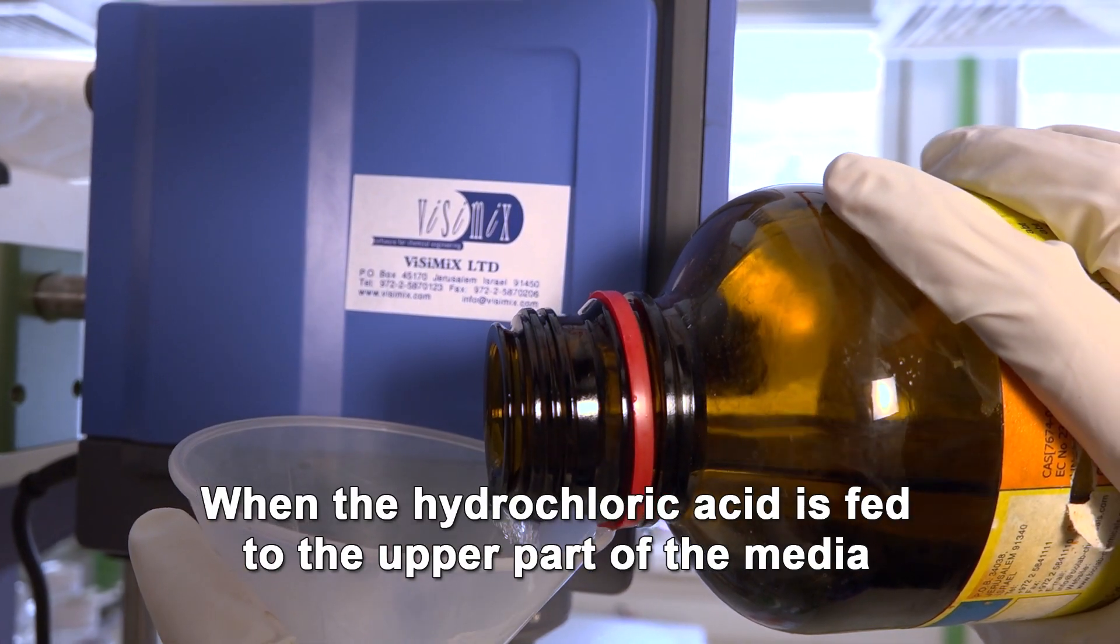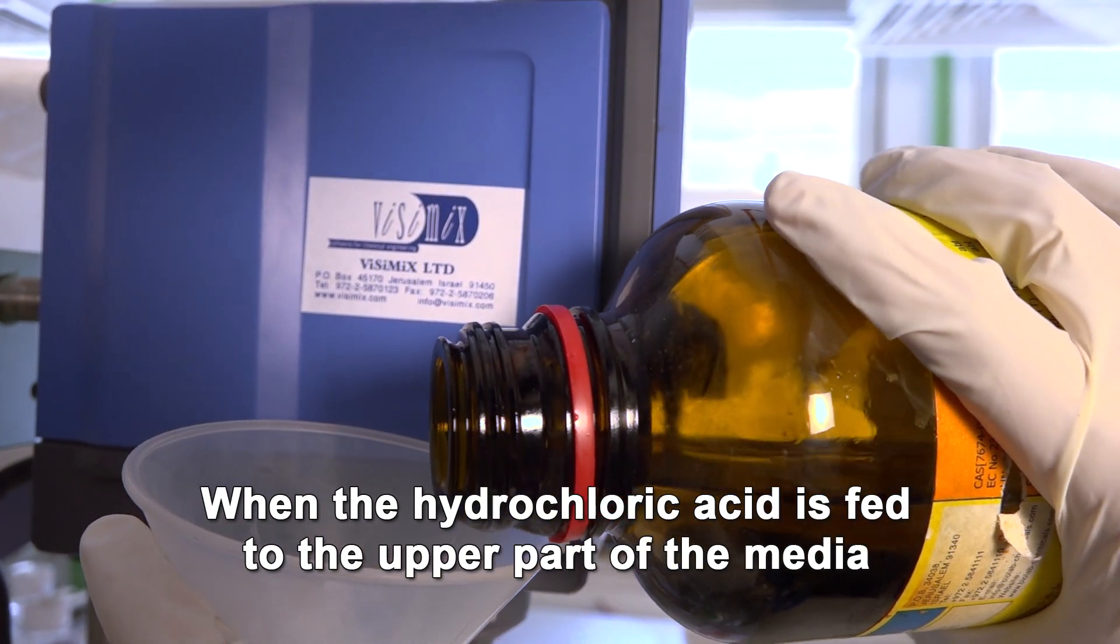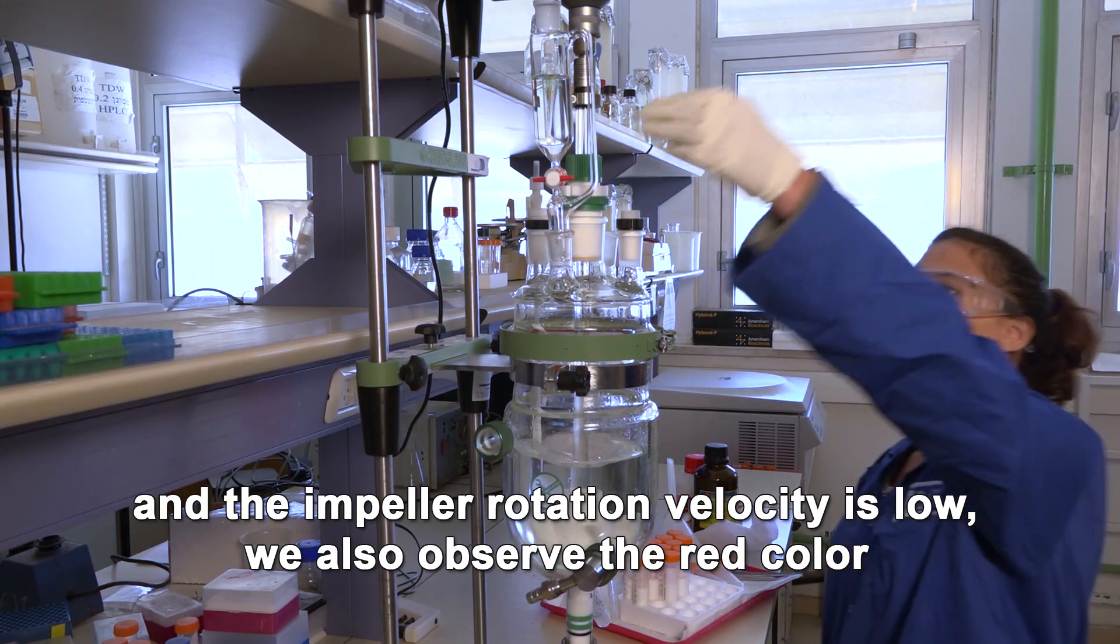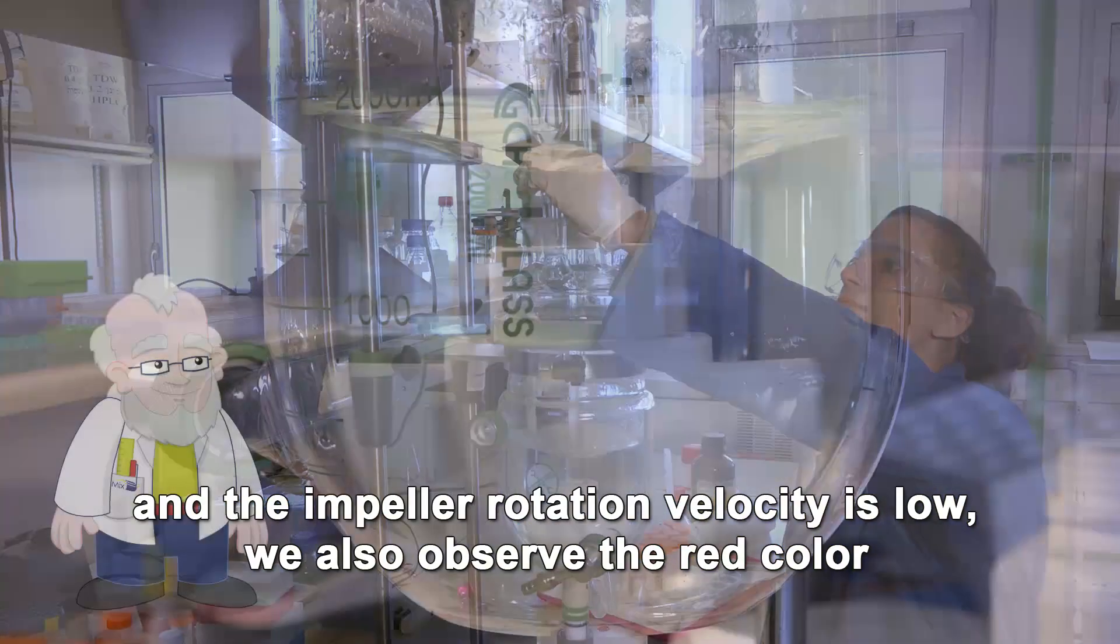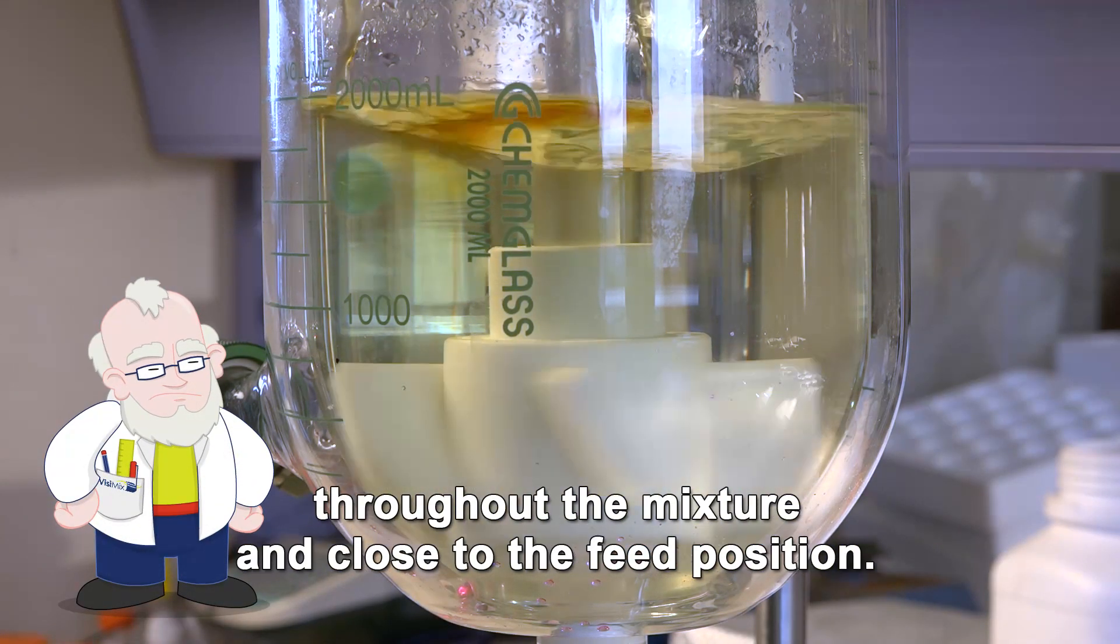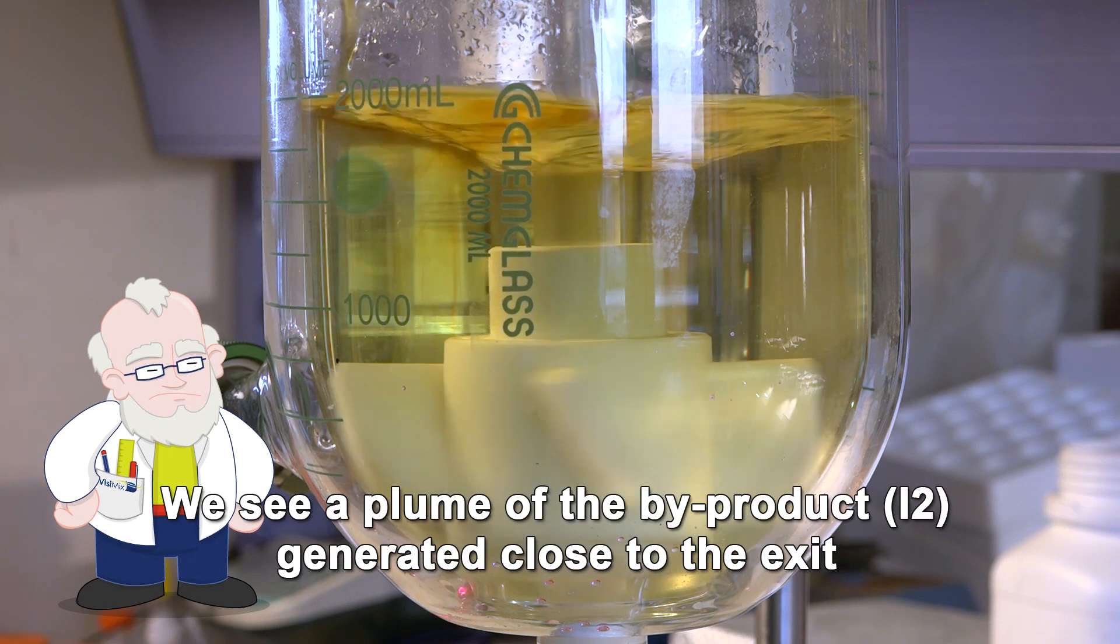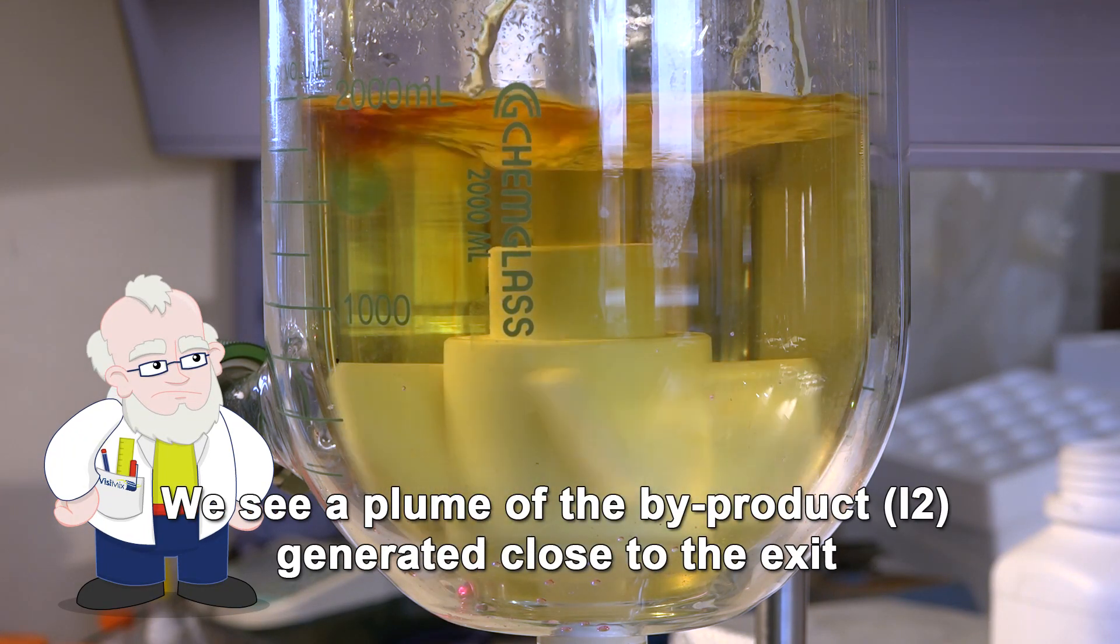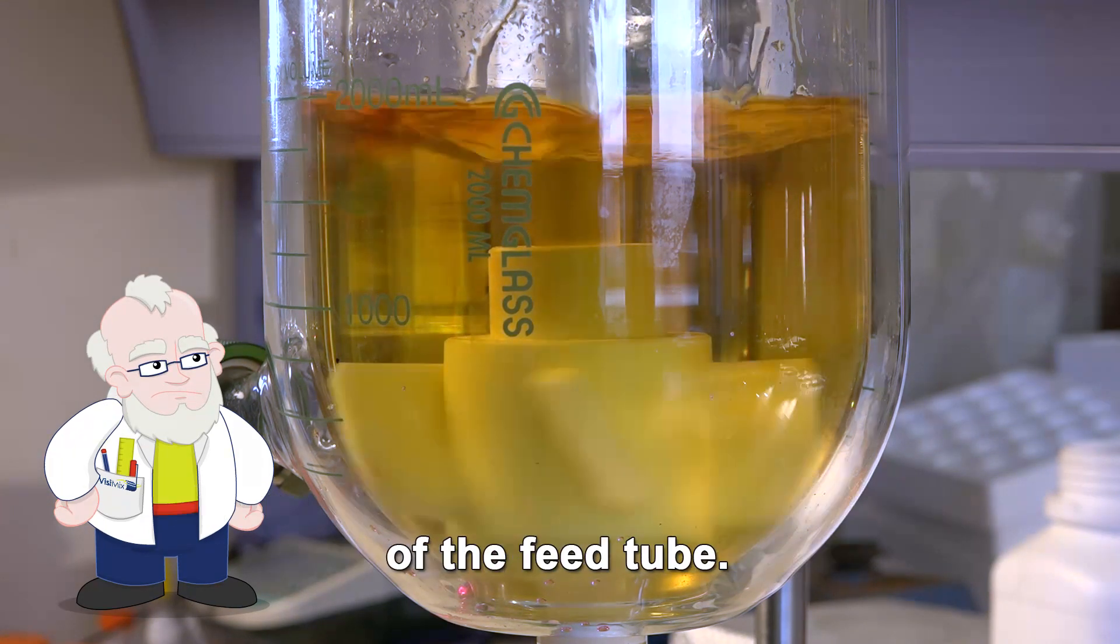When the hydrochloric acid is fed to the upper part of the media and the impeller rotation velocity is low, we also observe the red color throughout the mixture and close to the feed position. We see a plume of the by-product, iodine, generated close to the exit of the feed tube.